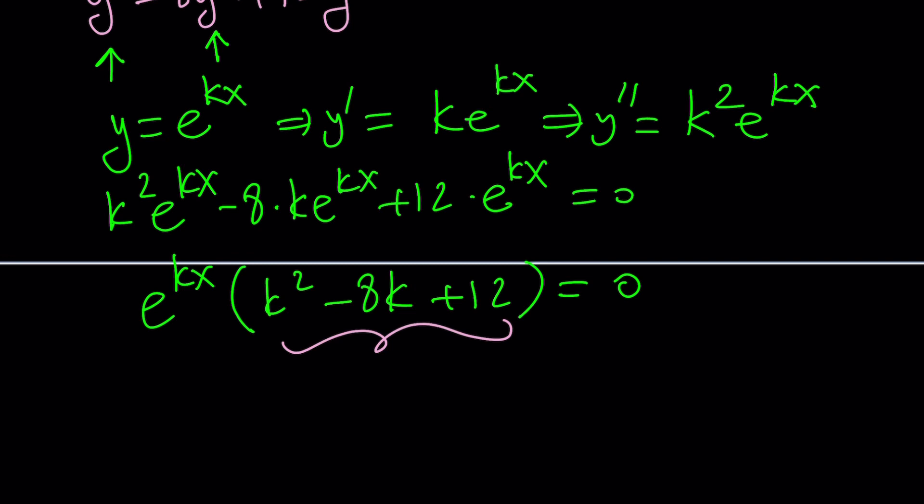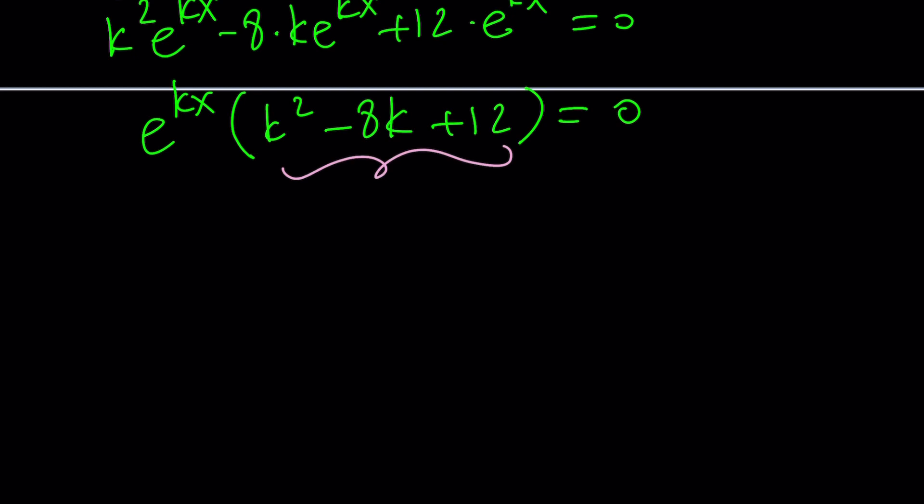Make sense? Okay. Let me tell you what it looks like. So we can factor this. Find two numbers whose product is 12, negative 2 and negative 6. Of course, you want their sum to be negative 8. So now we have k minus 2 times k minus 6 equals 0. Beautiful.